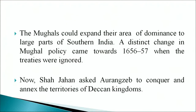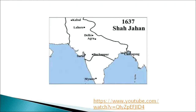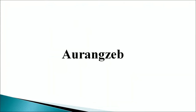The Mughals could expand their area of dominance to large parts of southern India. A distinct change in Mughal policy came towards 1656-57, when Shah Jahan asked Aurangzeb to conquer and annex the territories of the Deccan kingdoms. Some historians argue this change was to exploit the resources of the Deccan states for the Mughals. However, this change did not benefit the Mughal empire substantially and created more problems for the future. The map shows Shah Jahan's era of India.